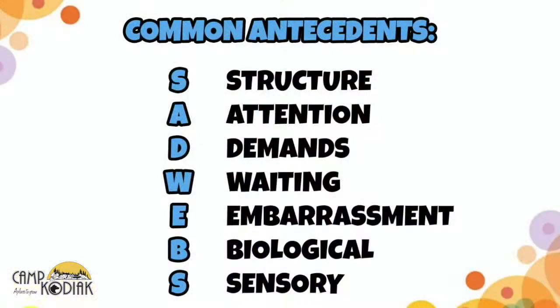The A stands for antecedent. An antecedent is anything that happened before the behavior. Some people think of these antecedents as triggers, some people might call them stressors, but really it's anything that would have happened before the behavior that you observed. There are seven common antecedents, and for ease of memory I've made a mnemonic: SAD WEBS.